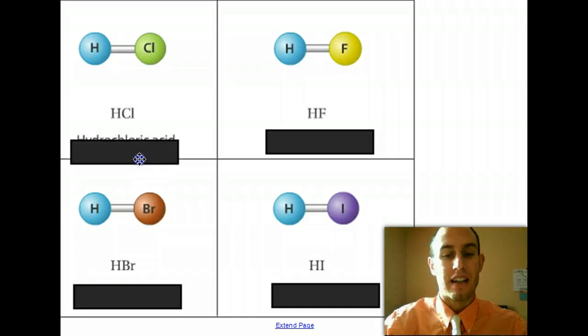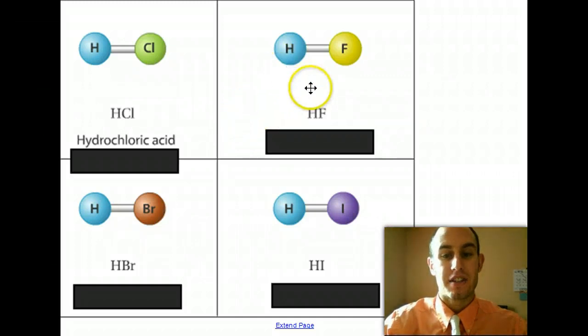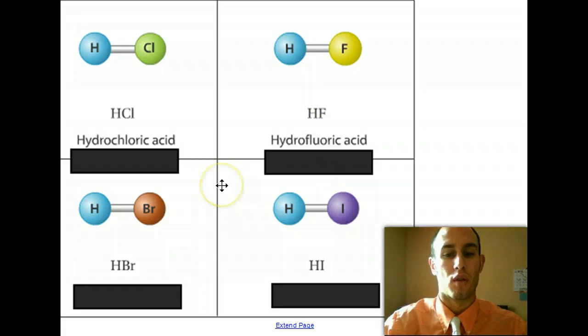So HCl will become hydrochloric acid. If we look at HF, H is hydro, fluorine becomes fluoric, and the word acid, so hydrofluoric acid.